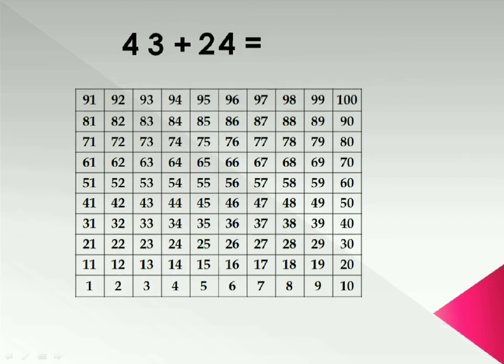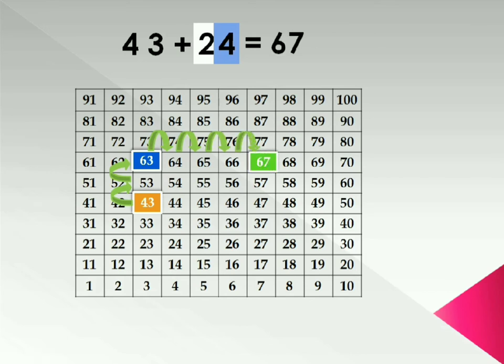So let's do one more example. 43 plus 24. So highlight 43 in the table. Now note there are two tens in the 24. So jump two steps upward. That is 63. And as 4 is at units place. So move four steps in the right. That is 67.